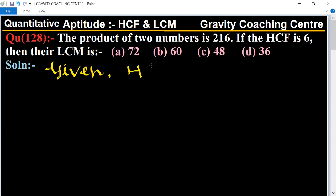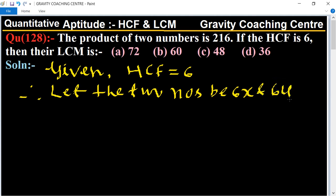In this question, given HCF is 6. Therefore, let the two numbers be 6x and 6y. According to the question, their product is 216, means 6x multiply 6y equal to 216.